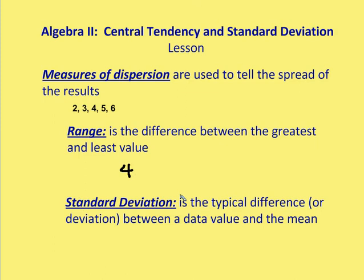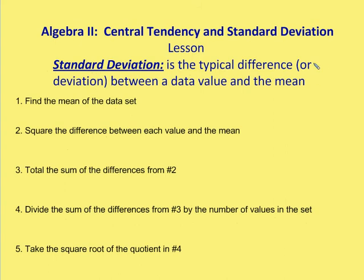Standard deviation is the typical difference, or deviation, between a data value and the mean of the set. To calculate it, we first find the mean, then take each value and square its difference from the mean, sum all those squared differences, divide by the number of values, and finally take the square root of that result.